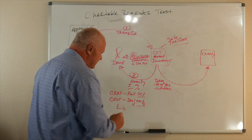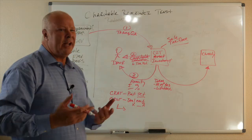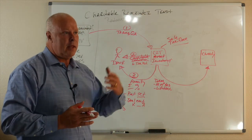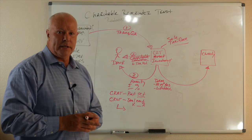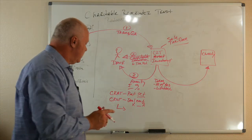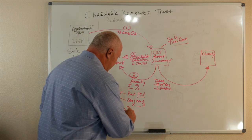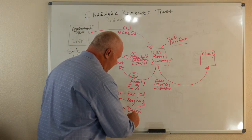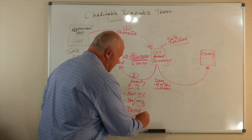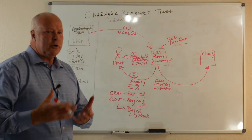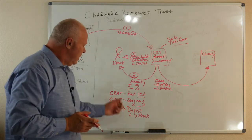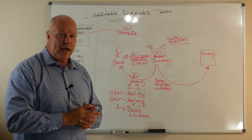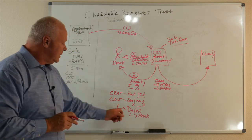The other thing that you can do in a charitable remainder unit trust, let's say we have a client that's 50 years old. They transfer this in. They really don't want this money until retirement. So, what we can do is we can defer the payments. And when we defer it, think about those payments are being banked.